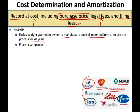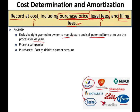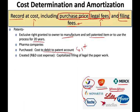The purpose of the patent is to give you the right to recoup your money. If you create the vaccine internally, which most likely they will, all you can capitalize are the legal and filing fees. If you purchase a patent, you will debit a patent account for the cost. Research and development costs are treated as an expense, not an asset.